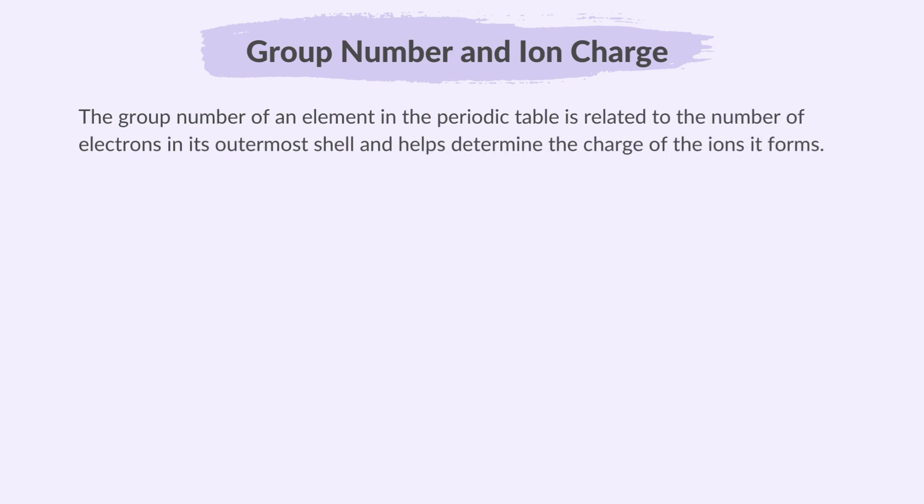Next, group number and ion charge. The group number of an element in the periodic table is related to the number of electrons in its outermost shell and helps determine the charge of the ions it forms.